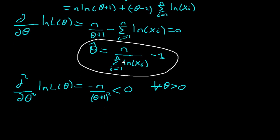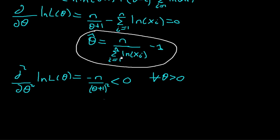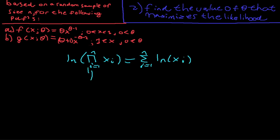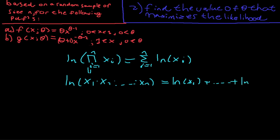As promised, here is why the natural log of the product from i equals 1 to n of xi equals the sum from i equals 1 to n of the natural log of xi. The product inside the log is simply x1 times x2 times ... times xn, and by the logarithm product rule, the natural log of a product equals the sum of the natural logs. So the natural log of x1 times x2 times xn equals the sum from i equals 1 to n of the natural log of xi. Have a nice day, bye bye.